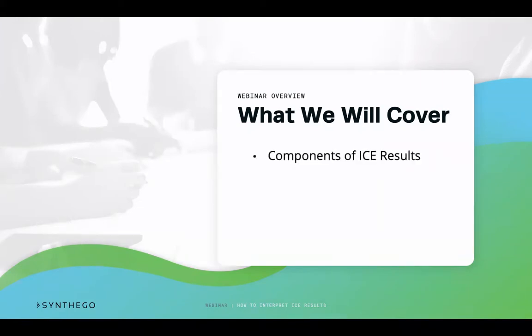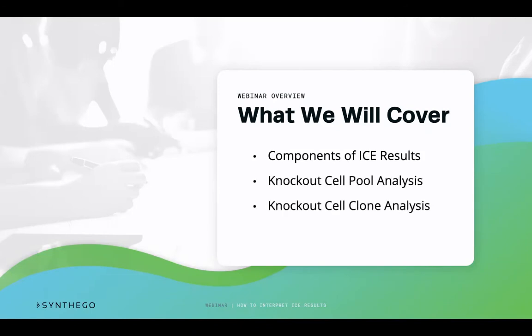Here is what we will cover. First, we will cover each of the various components of ICE displayed after it processes your input files and sequences. These components will allow you to compare edited sequences to other edited sequences and the wild type. Additionally, you will be able to analyze your CRISPR-editing efficiency observed in the sequences. We will then transition to discussing what a knockout cell pool and a knockout cell clone analysis look like when uploaded to ICE. We will finish by understanding what sets a knockout cell pool apart from a knockout cell clone. Remember that you can download a PDF copy of the full slide deck to follow along and take notes during this webinar.